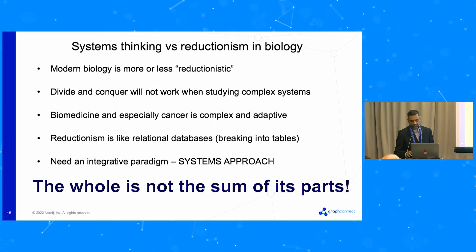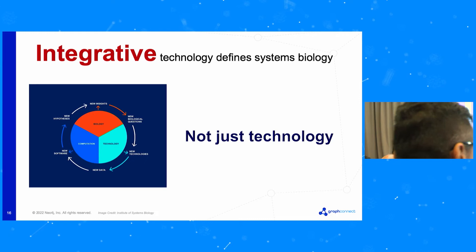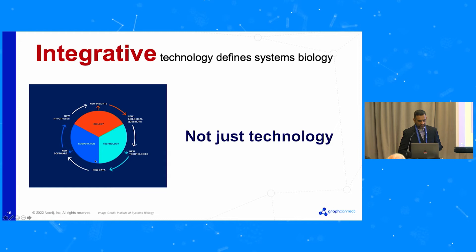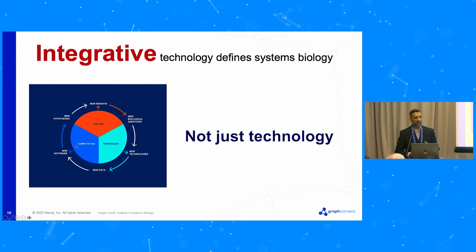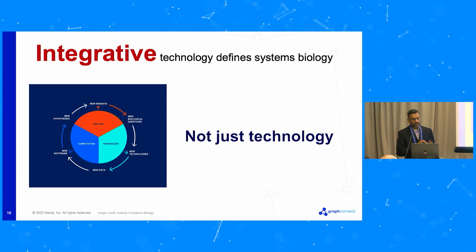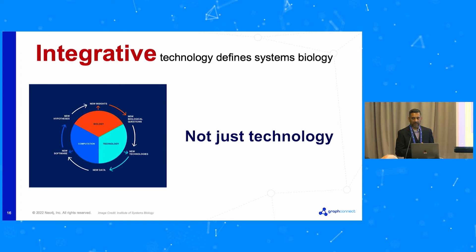We need an integrative paradigm. The key paradigm is that the whole is not the sum of the parts — that is what defines systems biology or systems thinking. When we look at the definitions of systems biology, from the Institute of Systems Biology, there is technology that leads to computation and new biological insights, but a key word they are missing is that an integrative technology must be integrative. The integrative aspect of systems biology has been missing, and it's a defining aspect when we talk about systems biology.